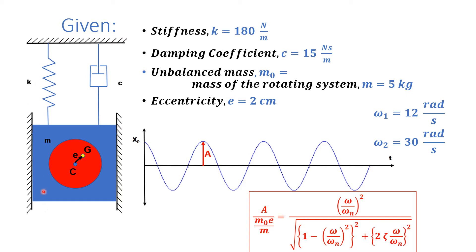For this rotating unbalanced system: stiffness K = 180 N/m, damping coefficient C = 15 N·s/m, and unbalanced mass M₀ — here we take M₀ equal to the total mass of the rotating system because the whole rotating mass has its center of gravity G at eccentricity E from the center of rotation. So both M₀ and M are taken as 5 kg, and eccentricity E is given as 2 cm. We need to find amplitude A₁ at ω₁ = 12 rad/s and A₂ at ω₂ = 30 rad/s.